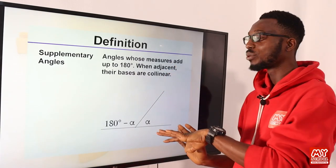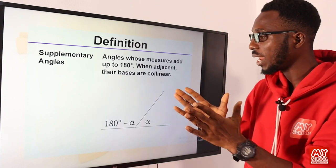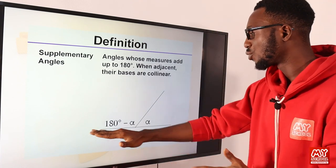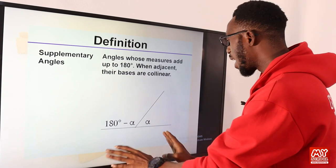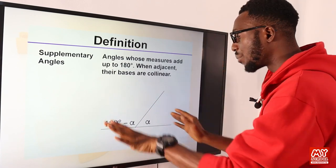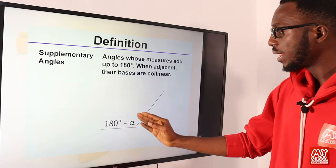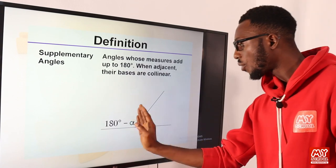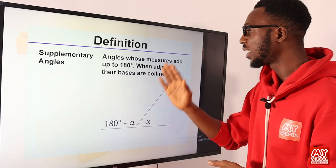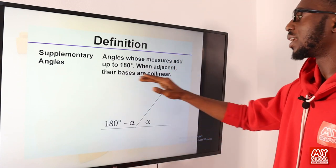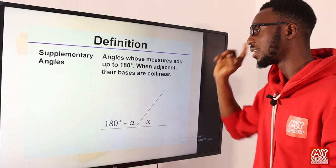We have the supplementary angle — these are angles that actually add up to 180. This refers to the angle on a straight line. Whatever number of angles are formed on a straight line, everything should add up to 180 degrees.